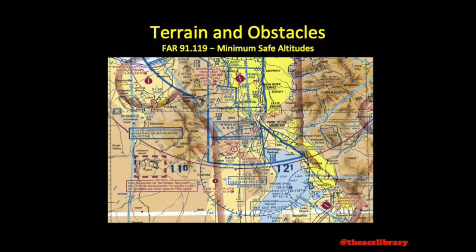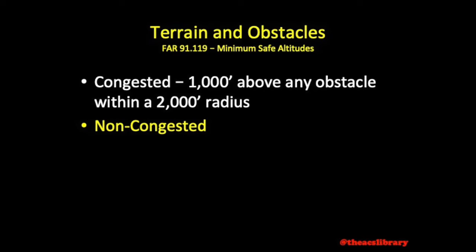A common misconception is that the yellow areas on the sectional depict congested areas while non-yellow depicts non-congested. This is not necessarily true. Yellow depicts heavily populated areas and the pattern the lights will make as you look down from the aircraft at night. Yellow areas are usually congested; however, being outside of the yellow does not guarantee a minimum safe altitude below 1,000 feet.